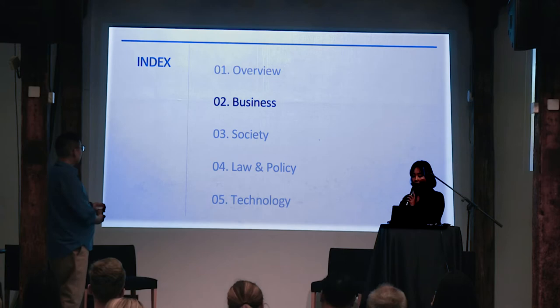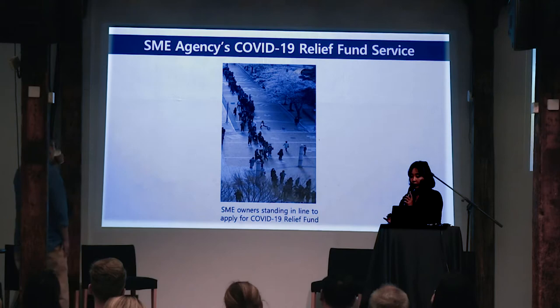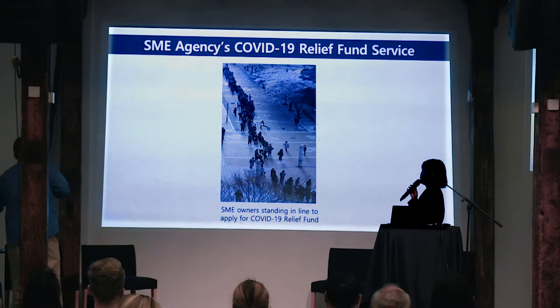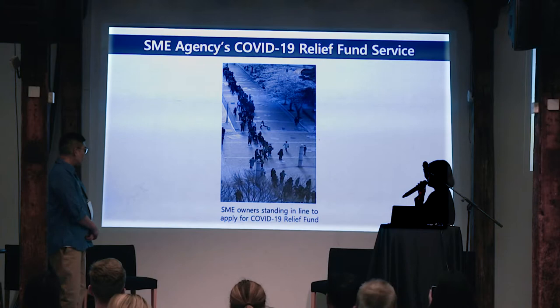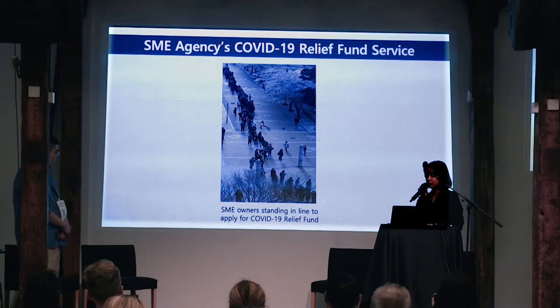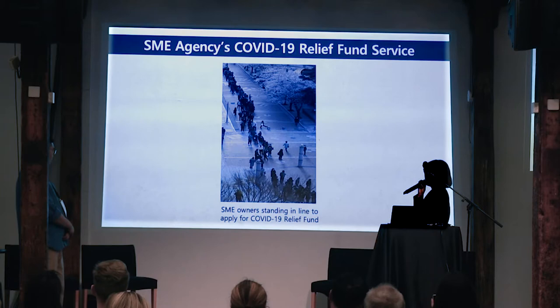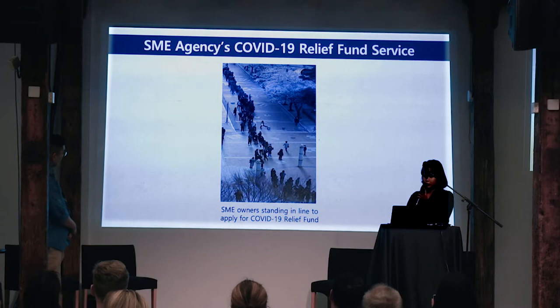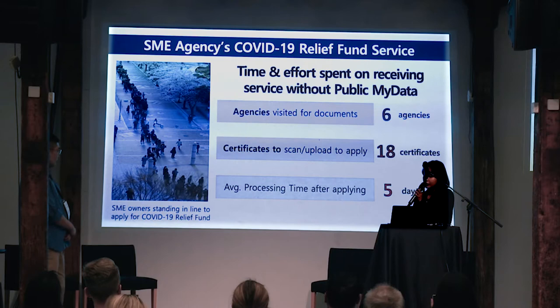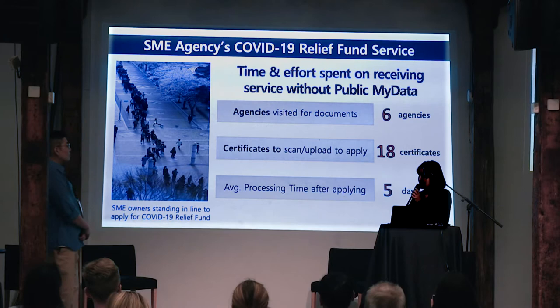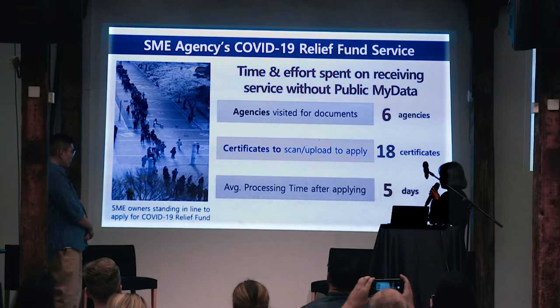I will introduce one of the best use cases. During COVID-19 quarantine, the Korean president decided to support small business enterprise owners who suffered from financial issues. However, to apply for that service, they had to stand in line, visit six agencies to prepare documents, and scan and upload 18 certificates to apply online. On average, it took five days.